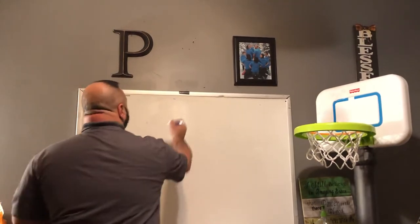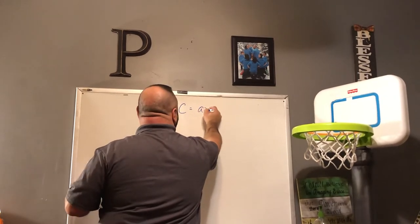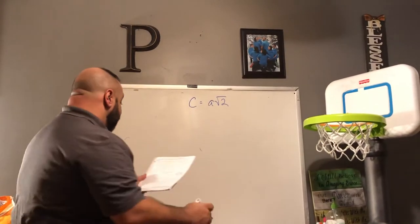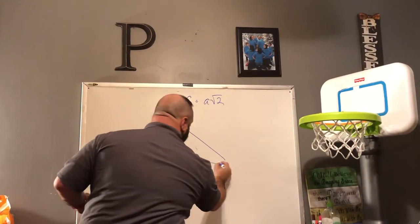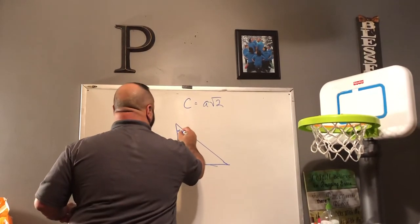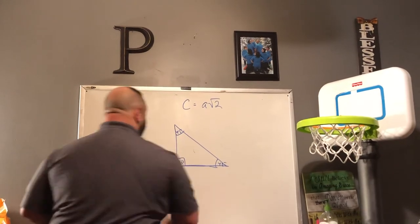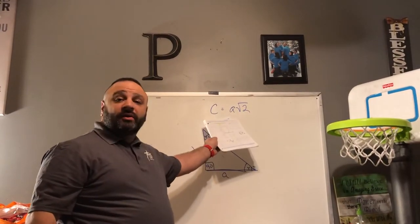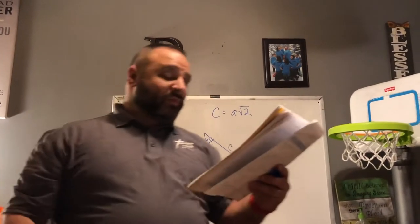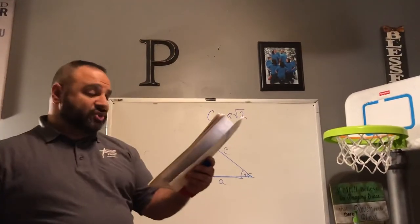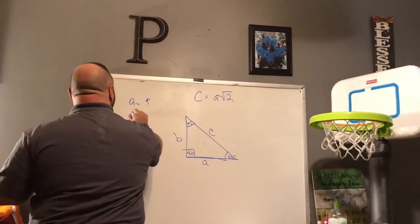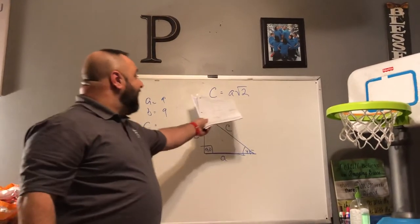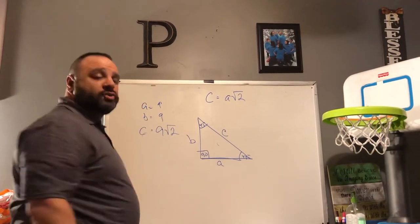So the formula is C equals √2 times the length of either side — A or B, same measurement. For number four on page 26: if A equals 9 and B equals 9, what is C? It's simply 9√2. That's it — real basic. You'll do the odds on this page for homework.